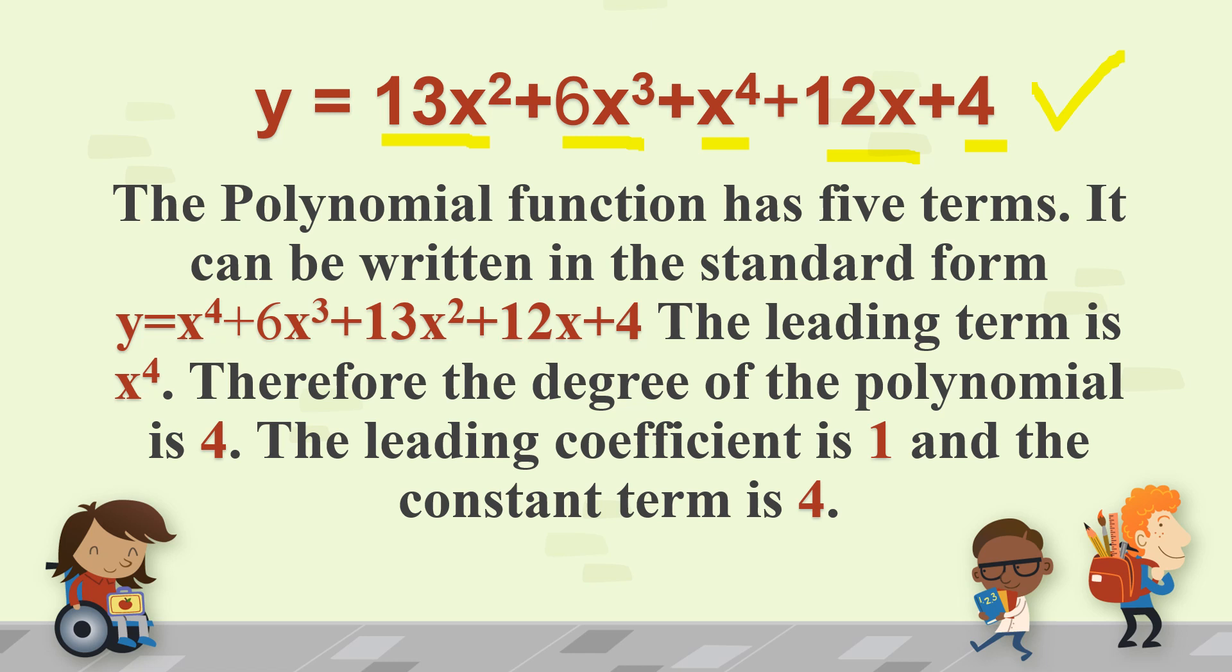The leading term, once it's arranged in descending power, is x raised to 4. The leading coefficient is 1. Because there's no number in front of x raised to 4. So there's a 1 in front. And then, the constant term is positive 4.